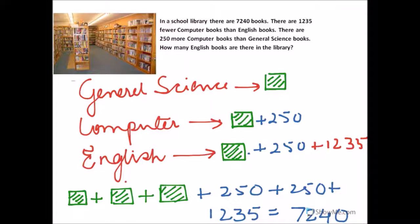The number of books in general science can be represented by a unit — a green square like this. Now there are 250 more computer books than general science, so the number of computer books can be given as this unit plus 250. The number of English books is this unit plus 1,235 more than computer books.